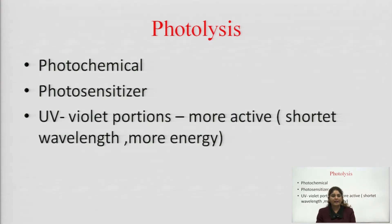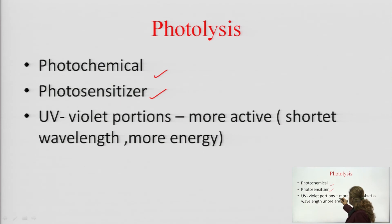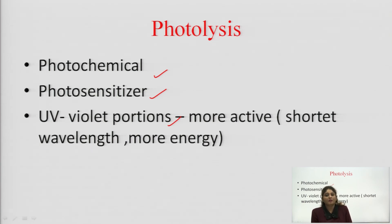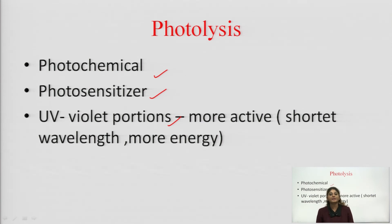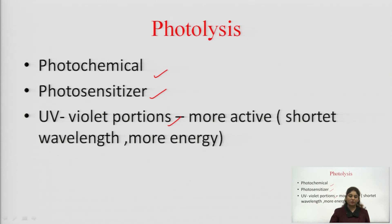Photolysis can be studied on the following basis: photochemical, photosensitizer, and UV portion. Photochemical means photolysis is accompanied by chemical reactions, which is why it is known as a photochemical process. Photosensitizer means the drug is very sensitive to photons — that is, light — so whenever such drugs are exposed to light, they will show photolysis. Some drugs are very sensitive to UV light (sunlight) and show considerable degradation in sunlight.